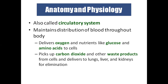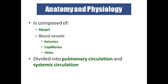The heart comes under the circulatory or cardiovascular system and maintains the distribution of blood throughout the body. It delivers oxygen and nutrients like glucose and amino acids to every cell, and picks up carbon dioxide and other waste products from cells, delivering them to the lungs, liver, and kidneys for elimination. The cardiovascular system is composed of the heart and blood vessels — arteries, capillaries, and veins — and is divided into pulmonary circulation and systemic circulation.